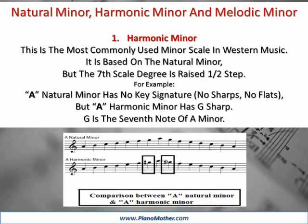There are three types of minor scales: natural minor, harmonic minor, and melodic minor. The harmonic minor is the most commonly used minor scale in Western music.